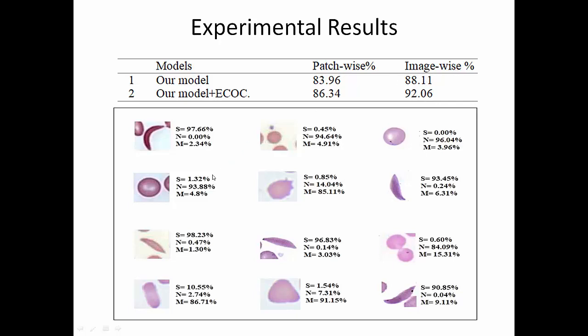Here are samples of prediction of different patches. As you see here, there is a sickle shape 97.66%, normal is 0%, and other diseases could be 2.34%. Another example: sickle is 0%, normal is 96%, and other diseases 3.9%, as shown here for different patches.